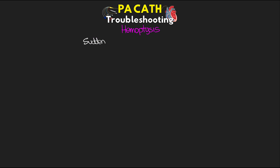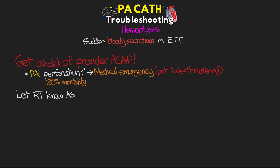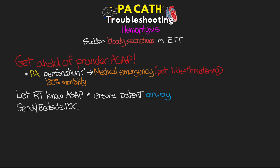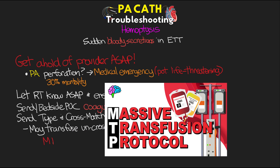Last but certainly not least is if your patient develops hemoptysis or you notice sudden bloody secretions in the endotracheal tube. First and very quickly, you need to get a hold of the provider, as this could be a sign of pulmonary artery perforation — a medical emergency and potentially life-threatening situation. In fact, 30% of patients who do have perforation won't actually survive it. Make sure to let your RT know as soon as possible. In the meantime, ensure patency of their airway and try to prevent any further alterations in oxygenation or ventilation. Send off or do bedside point-of-care for coagulation studies and type and cross-match blood. If large enough, begin transfusing on cross-matched O blood, and this could turn into a massive transfusion situation.